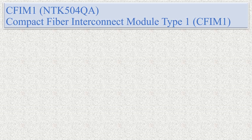Hello friends. In today's video we are going to discuss about CFM1. CFM1 is the Compact Fiber Interconnect Module Type 1, and its pack code is NTK504QA. CFM stands for Compact Fiber Interconnect Module. We will discuss how many ports are in the CFM1, how the internal connectivity works, and how the sub-fibers of each MPO port are connected with another MPO port.